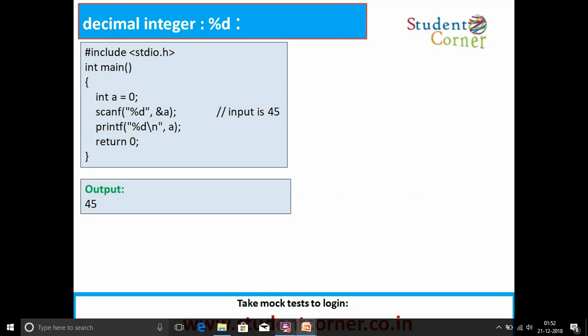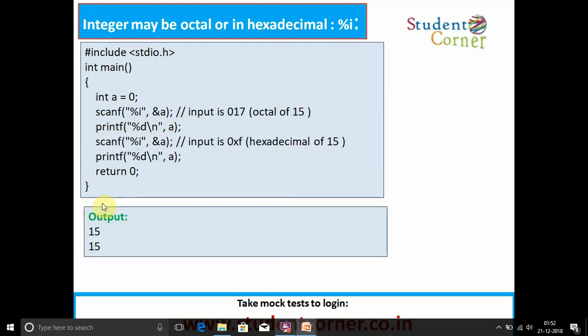Decimal integer using scanf function: we are giving 45 as an input and 45 will be printed. Here scanf percentage d ampersand a, printf percentage d a, so 45 will be printed. In the second example, percentage o address of a, input is 017, it is octal equivalent to 15. Similarly, 0xff hexadecimal equivalent to 15, so 15 will be printed.